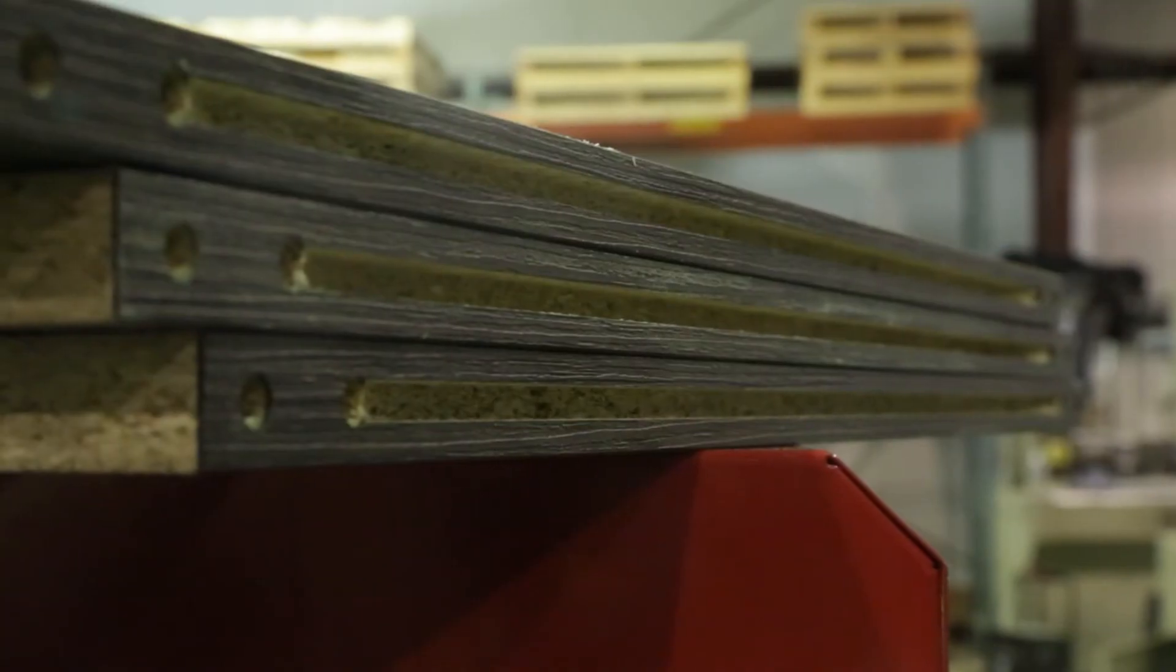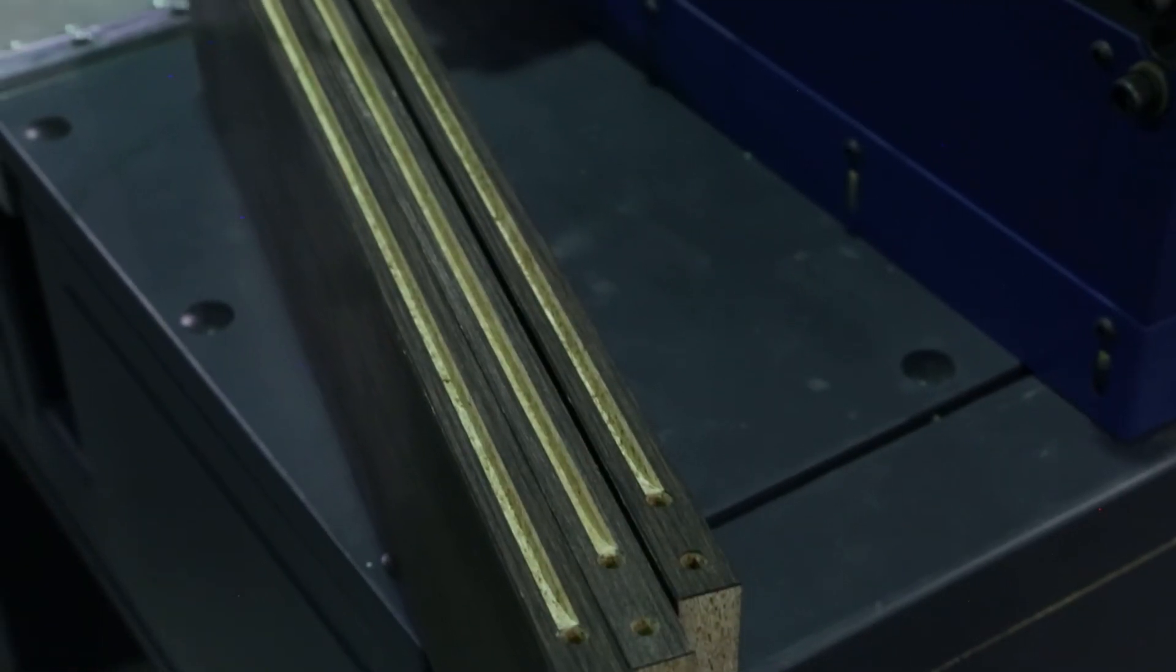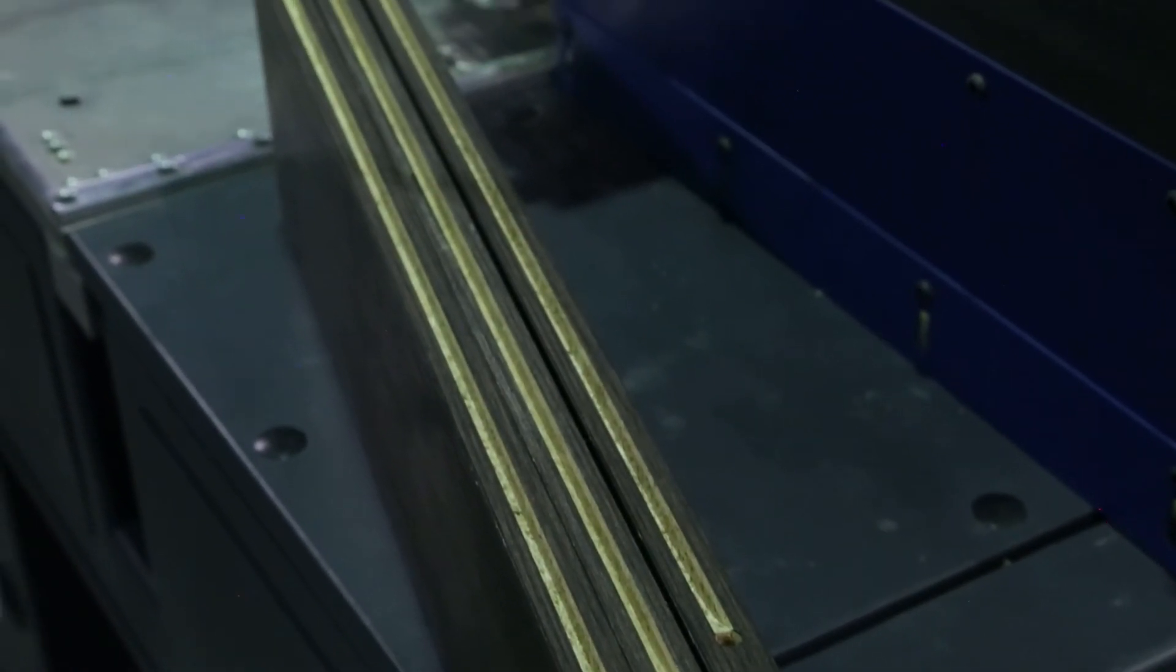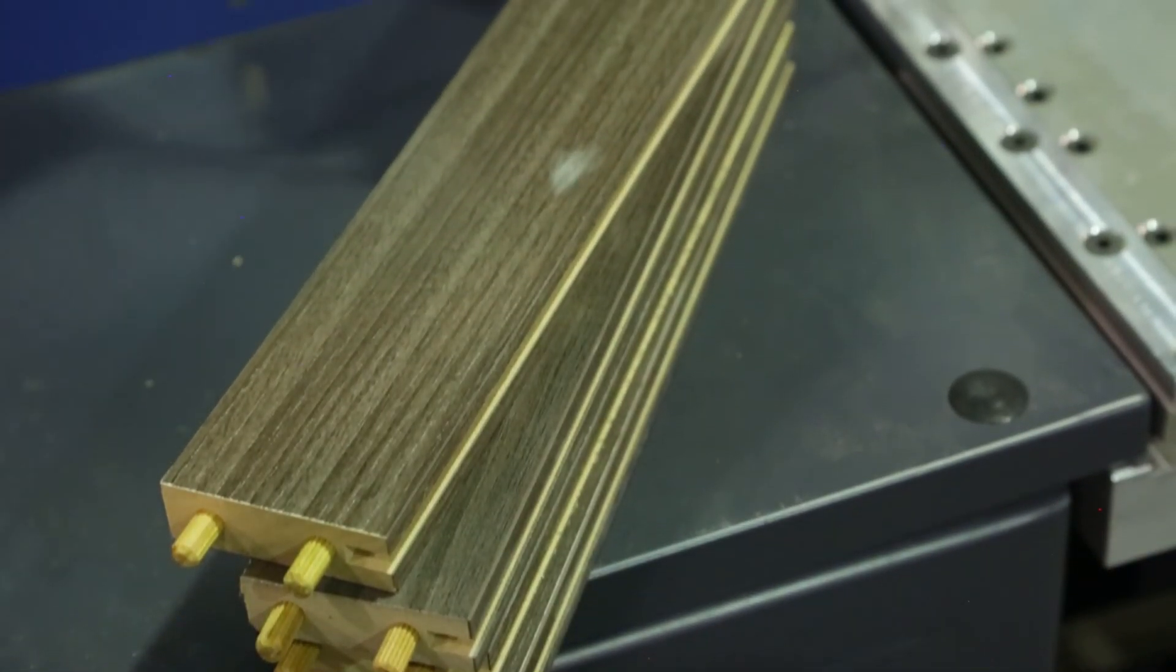In addition to making 5-piece doors, the HP5D can be used as a standard drill and dowel machine to produce cabinet boxes or face frames.